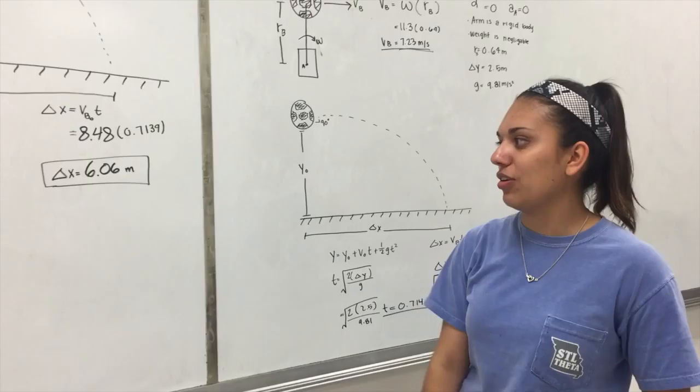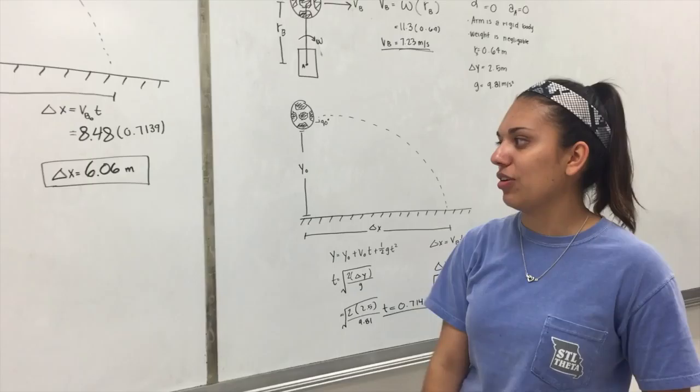That just shows that with the velocity of someone stepping forward, that will give you a greater distance when you're throwing the ball.